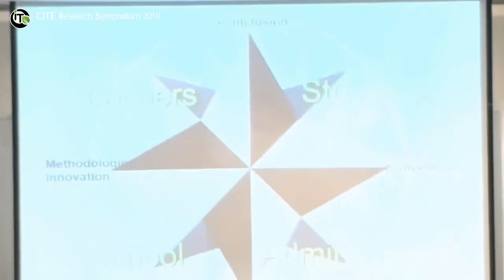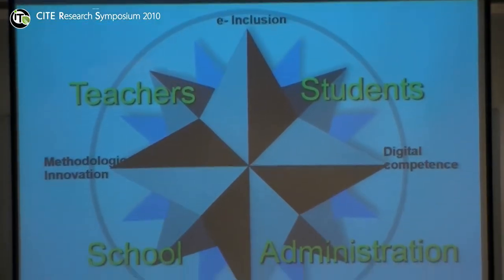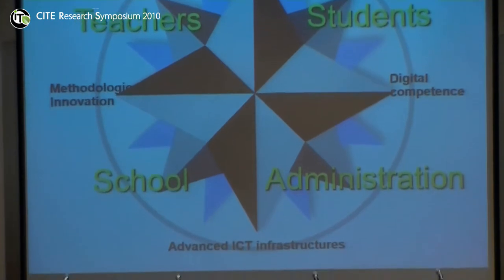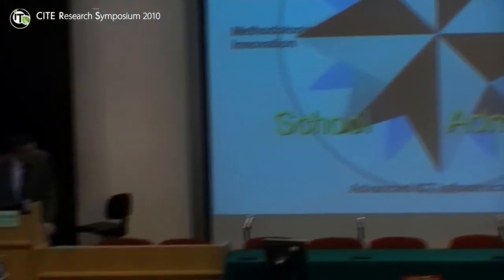Just to finalize my keynote, this is a roadmap for future actions. These are the four main preoccupations, indicated by four rows: e-inclusion or digital inclusion, promoting digital competence, fostering methodological innovation, and building on advanced ICT infrastructure.